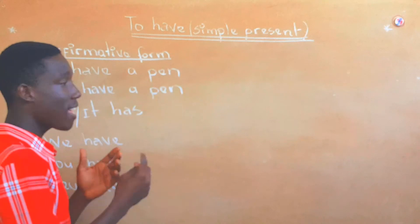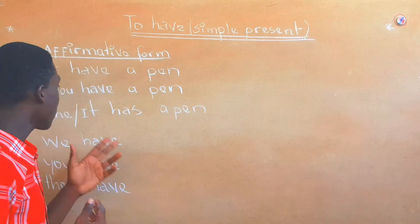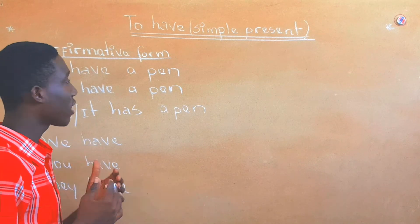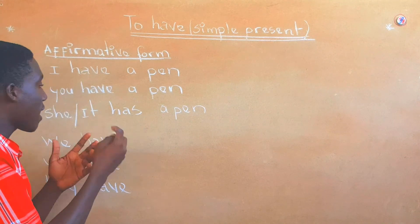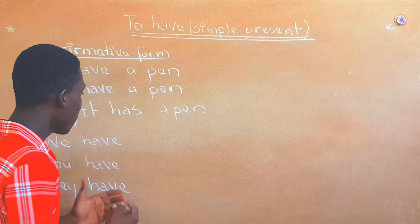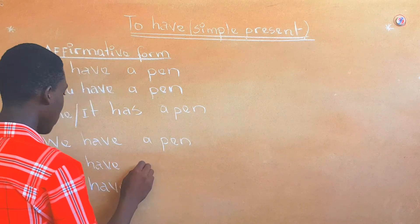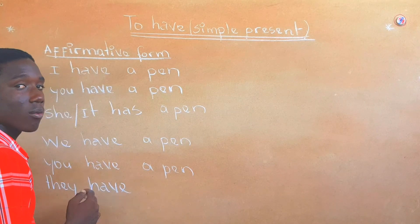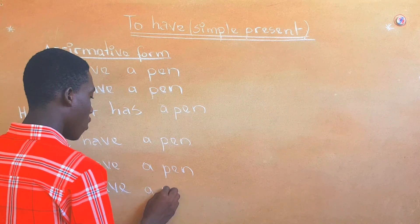And for he, she has a pen. For he you talk about a man, she for a woman, and it talks about an object or thing. For singular: I have, she has, it has. For plural: we have a pen, you have a pen, and they have a pen when you say they for the other person, more than one person.